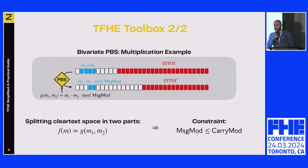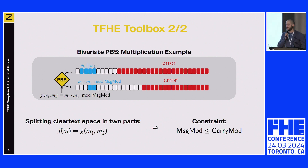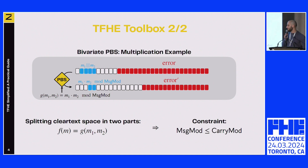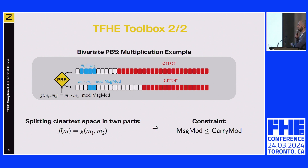Another important tool is the bivariate PBS. Basically, this is a PBS where we use the free space for carries to concatenate two messages. This allows bivariate functions to be computed—for example, the multiplication between M1 and M2, by concatenating them with a simple addition and shift, then expressing the univariate function as a bivariate one. The constraint is that the message modulus must be less than or equal to the carry modulus.